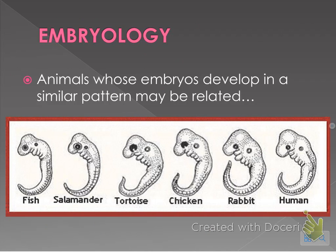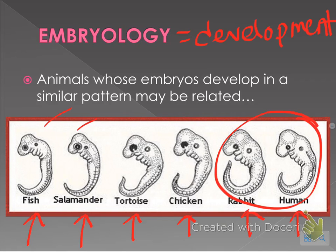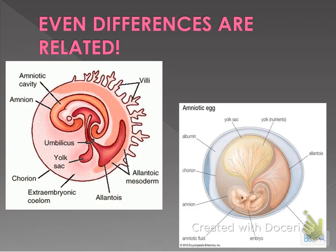Next is embryology — development in the womb, egg, or wherever the organism develops. If an embryo develops in a similar way, the organisms are more closely related. Looking at a fish, salamander, tortoise, chicken, rabbit, and human — even though they are different animals, they all develop roughly the same way in early stages because they are all vertebrates. They all start from the same origination, and that's how we know all vertebrates are related.